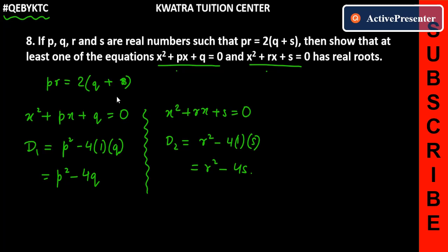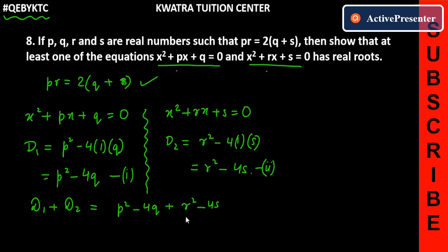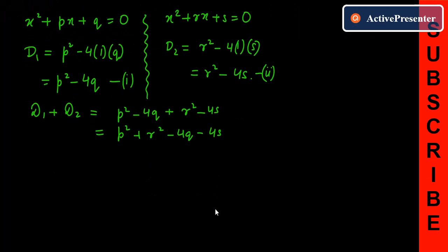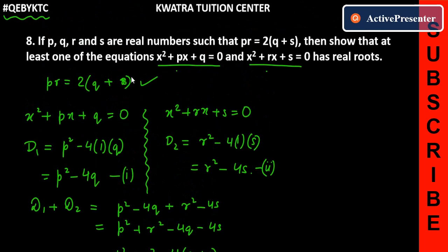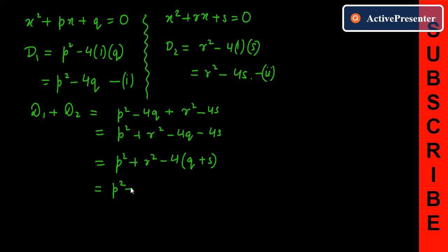Now we need to use the given condition PR equals 2(Q plus S). We will use it by adding the two discriminant equations. When we add equation 1 and equation 2, we can bring in Q plus S and use its value. Taking the sum D1 plus D2: D1 is P squared minus 4Q, and D2 is R squared minus 4S, giving us P squared plus R squared minus 4Q minus 4S. We still can't directly use the condition, because we need Q plus S. So we take minus 4 common from the last two terms, giving minus 4 into (Q plus S). Now we substitute: Q plus S equals PR over 2.